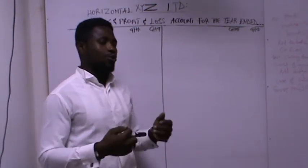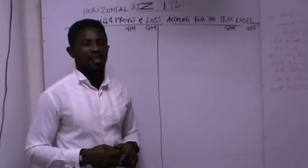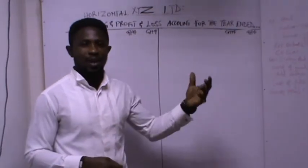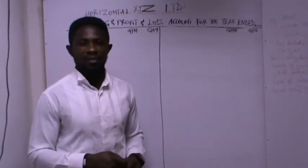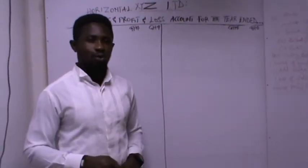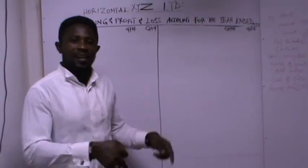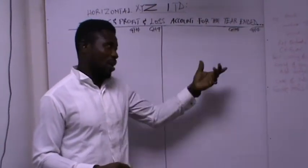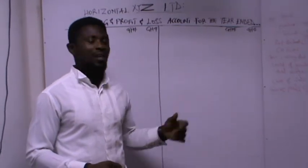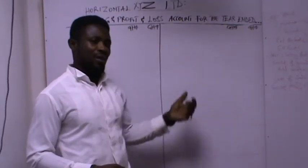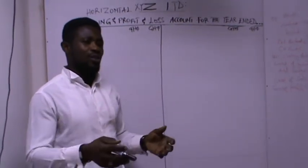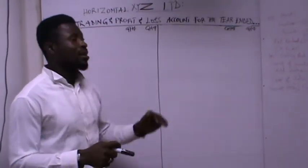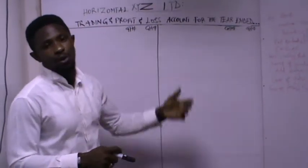what you are going to do — the first thing to consider — is you are going to use the information that will be given to you in the trial balance, and also you are going to consider the additional information that comes with the question or comes in addition to the trial balance. So with this you are going to consider some information that you need to prepare the trading and profit and loss account.